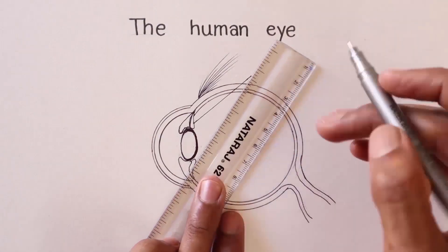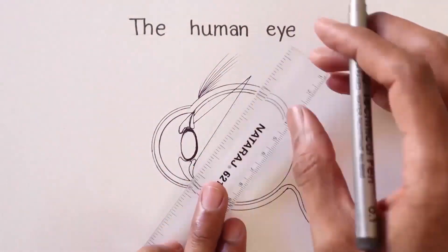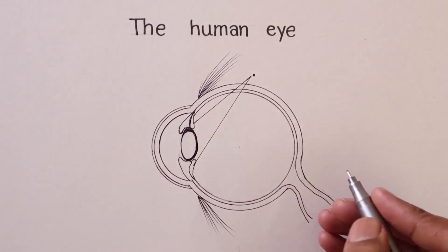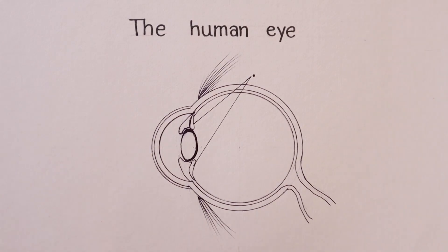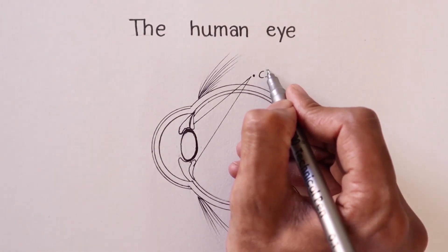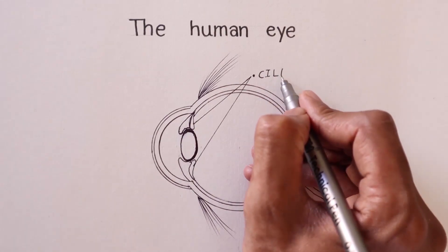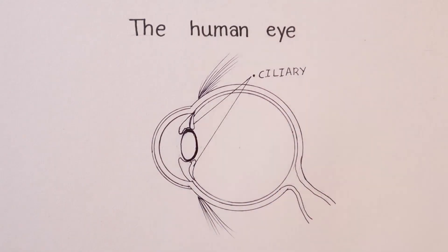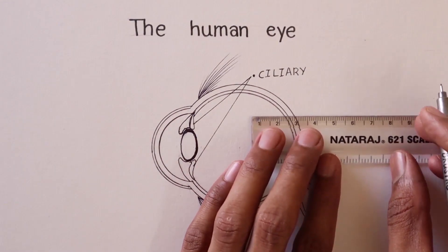So now it's time to label. Now we are labeling the parts of the eye. So this part is called as ciliary body. It protects the eye.